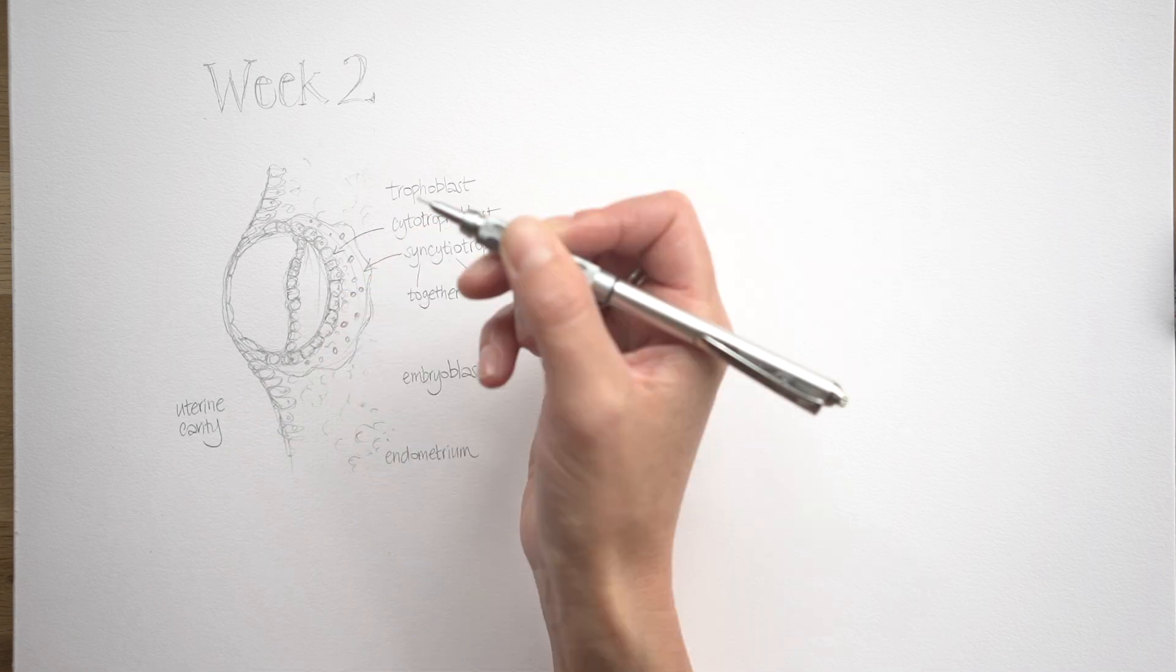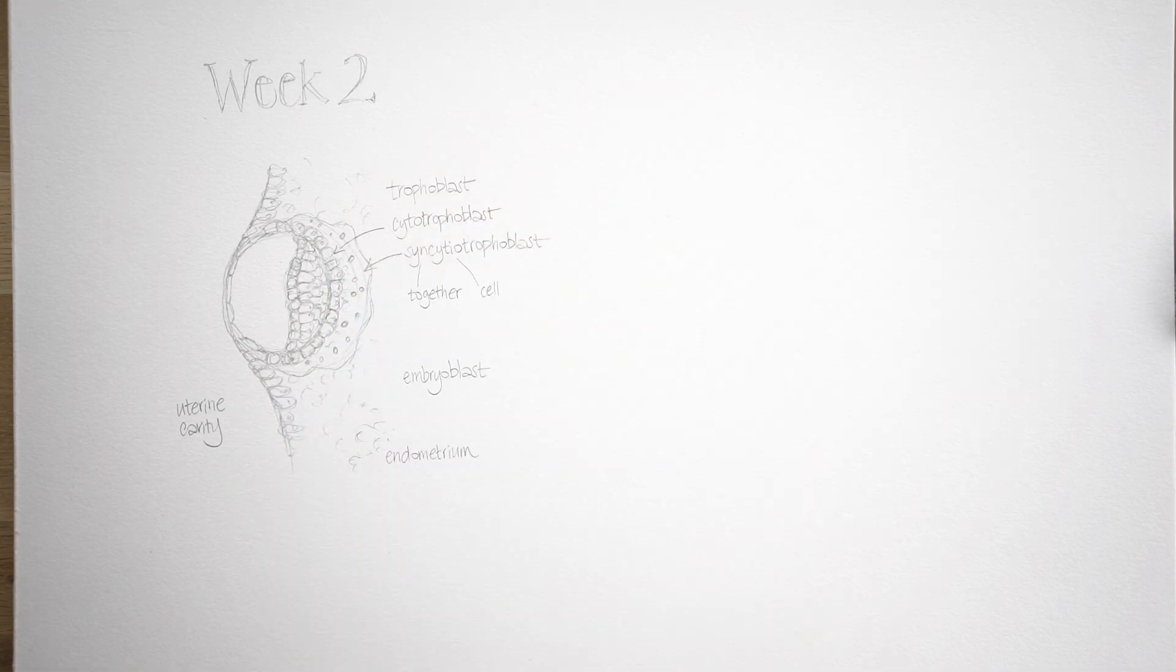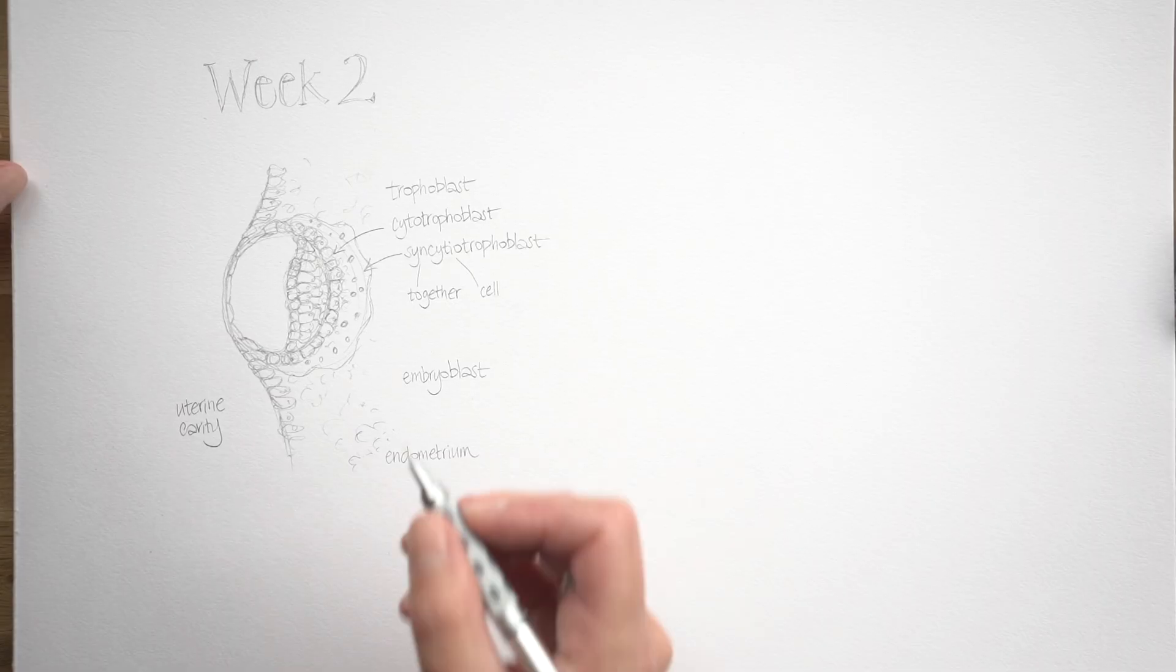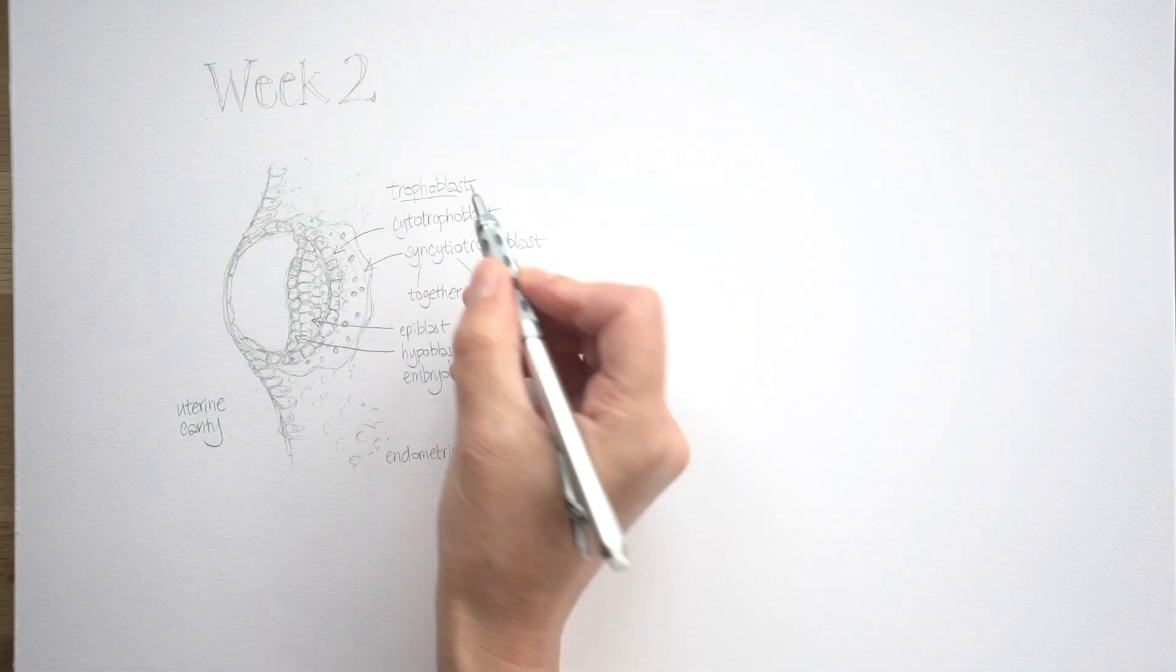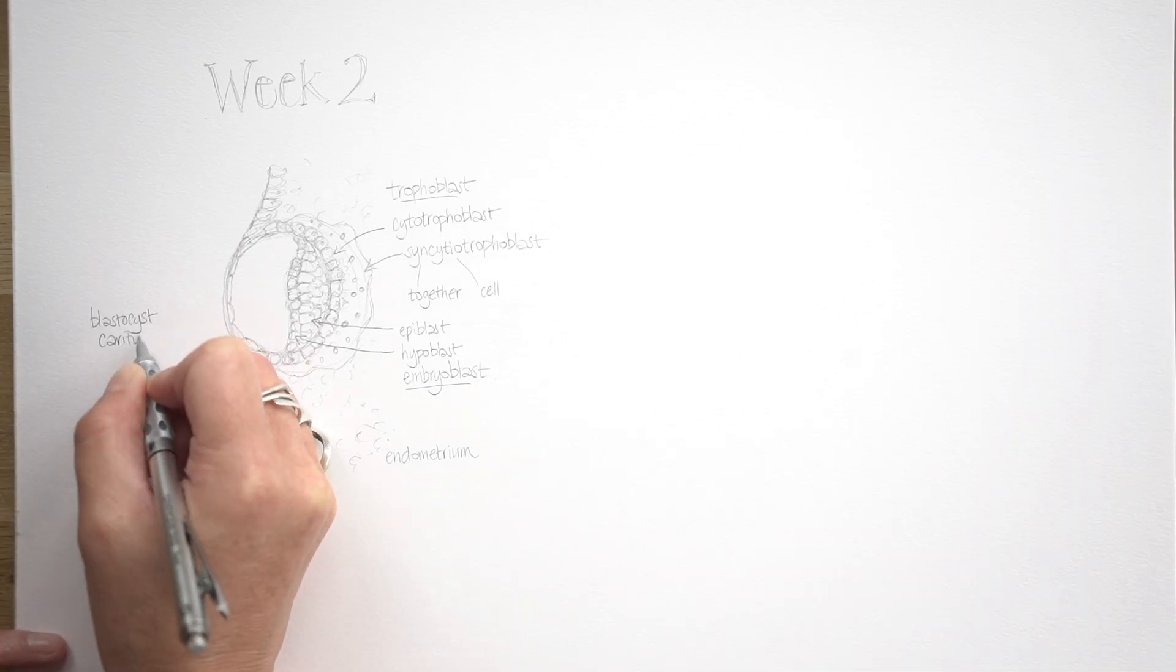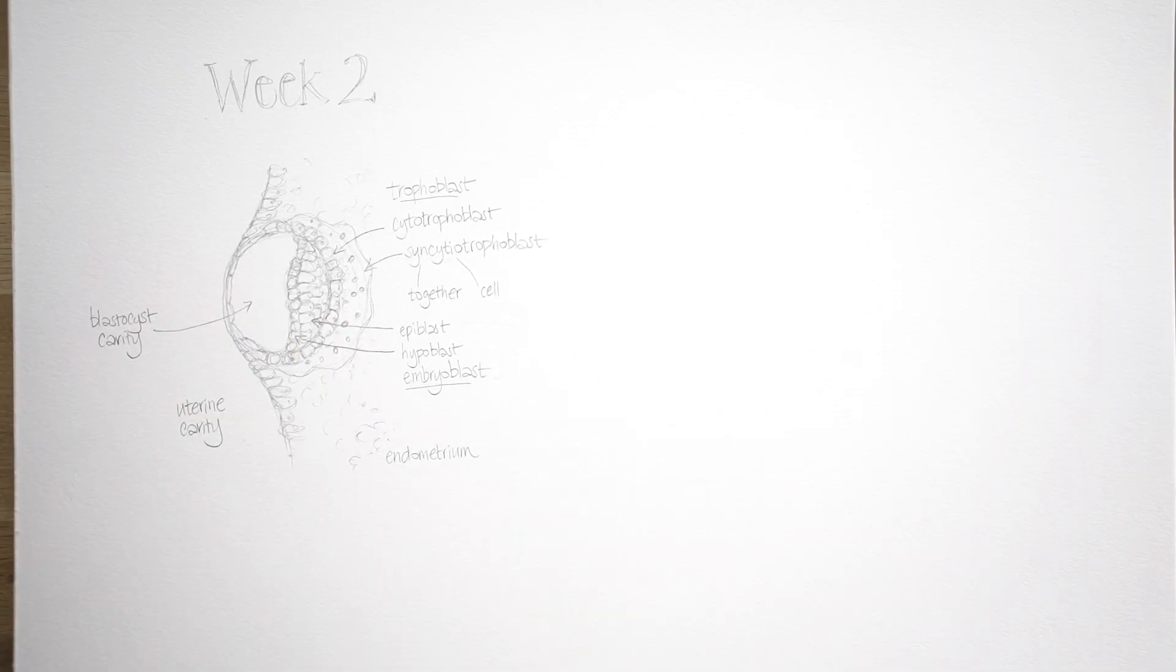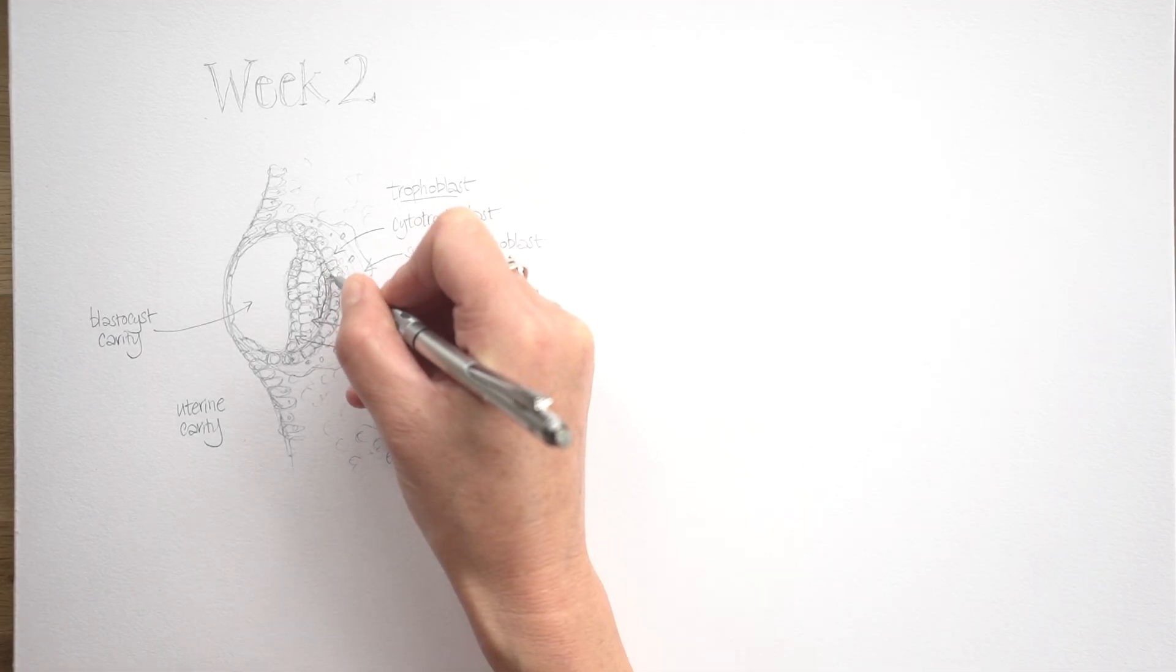The inner cell mass, or embryoblast, the bit that's going to become you, also divides into two layers at this point. There's a layer of cells which are cuboid, and that's called the hypoblast, that's facing the original blastocyst cavity. And then a layer of taller cells, which is called the epiblast. There's that cavity just there. And as I said, we're going to see two more cavities appear during this week.